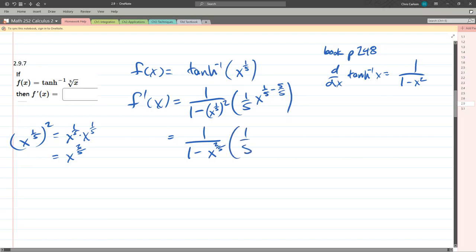Okay. 1/5th minus 5/5ths is negative x to the negative 4/5ths. I can write a better 5. Okay.